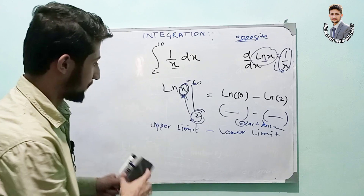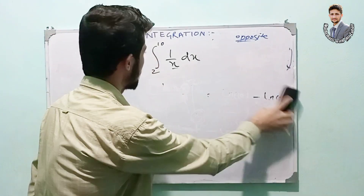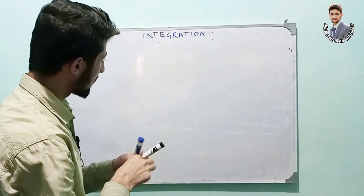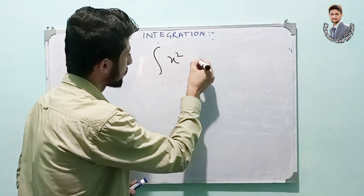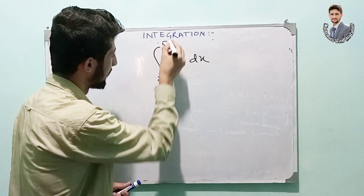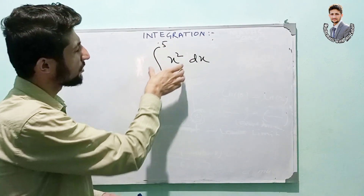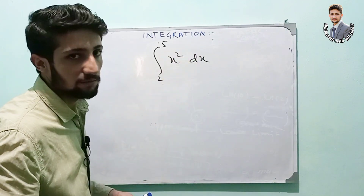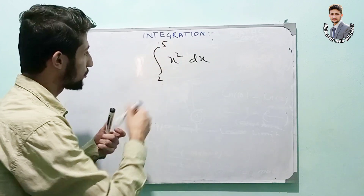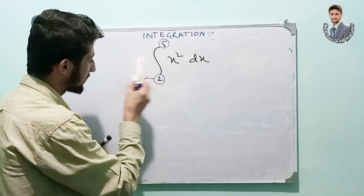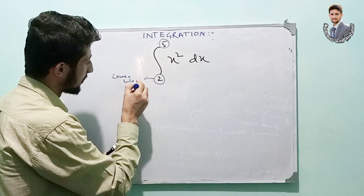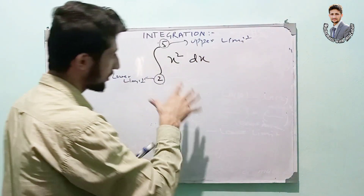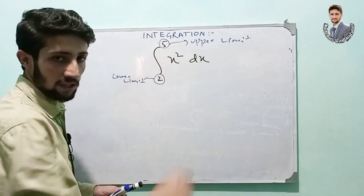Let me explain another example in a closed interval. I am integrating x² dx from 2 to 5. This is a closed interval. In an open interval it's easy — we just get a result and that's the end. But in a closed interval we have to put the values of the upper limit and the lower limit — 2 is the lower limit and 5 is the upper limit.